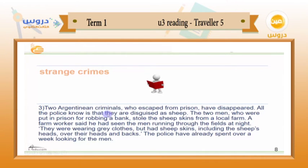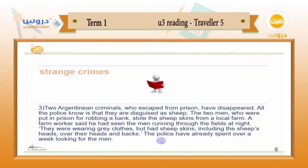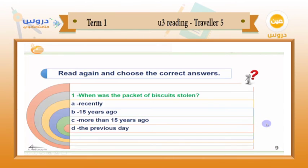Let's move to strange crime number three. Two Argentinian criminals who escaped from prison have disappeared. All the police know is that they are disguised as sheep. The two men, who were imprisoned for robbing a bank, stole sheep skins from a local farm. A farm worker said he had seen the men running through the fields at night. They were wearing gray clothes but had sheep skins — including the sheep's heads — over their heads and backs. The police have already spent over a week looking for the men.